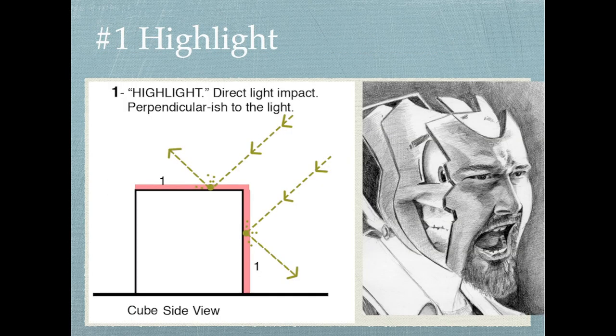A number one. That's called the highlight. That's where you have a direct impact from your light ray. In this image, the light ray is above and to the right. So that means if you drew a straight line from your light source, it would bounce directly on the top of the square and on the right side of the square. By the way, this is the side view of a cube. Let's look at the image over here on the right, and can you tell which side would be the number one highlight? That would be right about here.